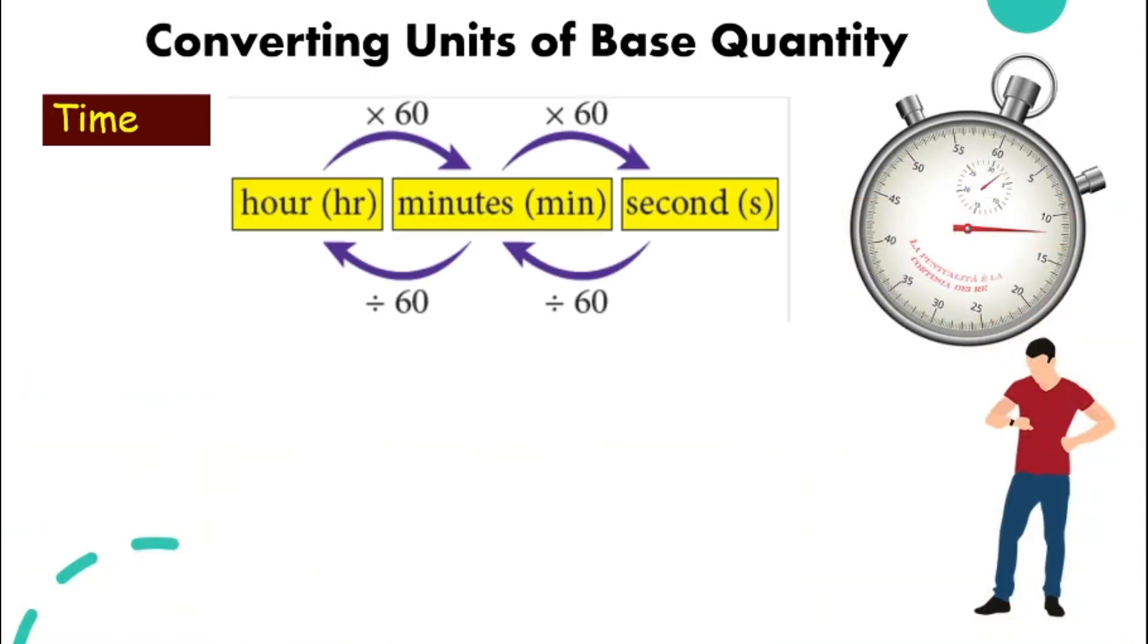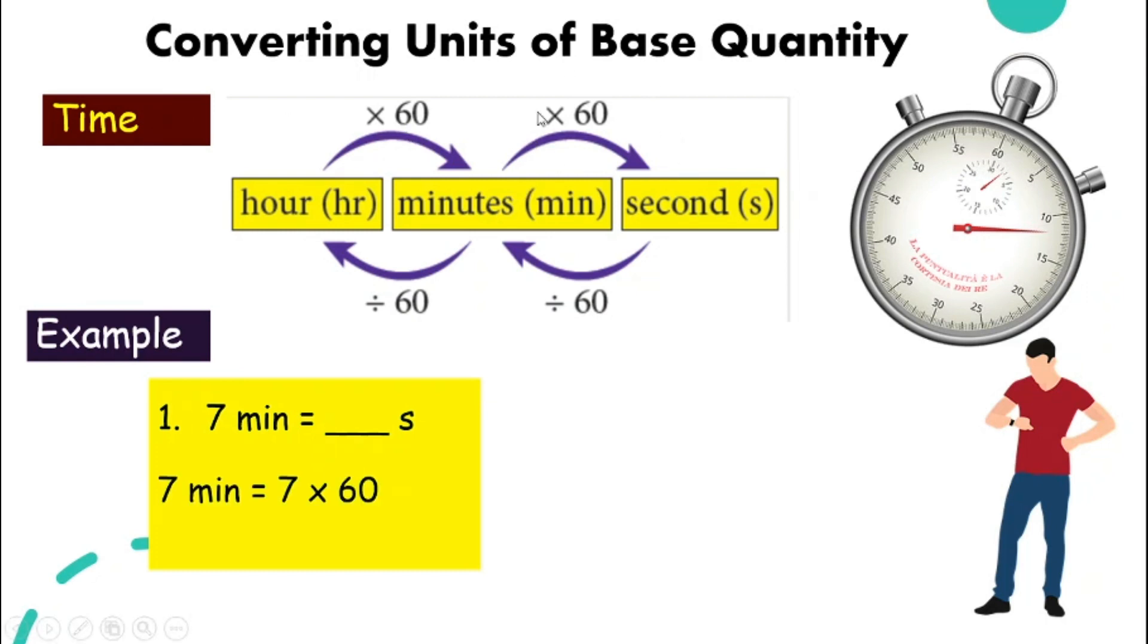How about time? We have hour, minutes and seconds. So if you go from hour to seconds, we time 60 for each step. Going backward, we divide it by 60. Look at that example. Seven minutes, how many seconds? So it's only one step. So seven times 60. And you will get the answer 420 seconds.